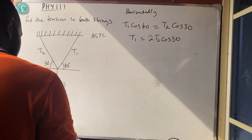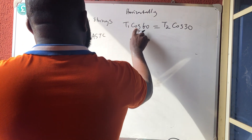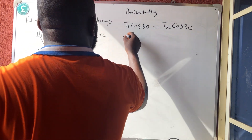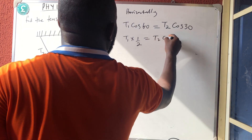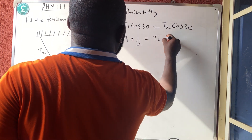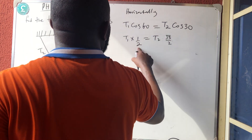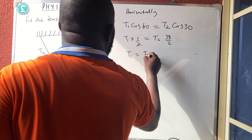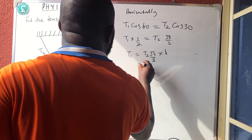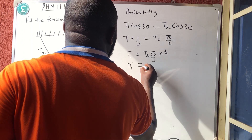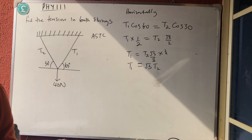Working through the algebra: T1 × (1/2) = T2 × (√3/2). Multiplying both sides appropriately, the 2s cancel, giving T1 = √3 · T2.